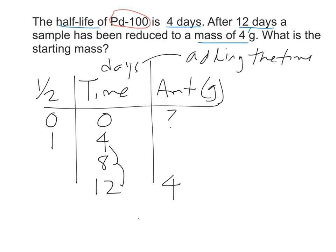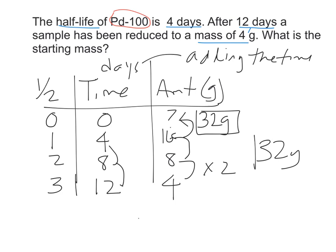I know that I'm left with four grams at twelve days and so that would mean it's three half-lives. I'm going to go backwards so I'm going to times this by two. Four times two is eight, eight times two is sixteen, sixteen times two is thirty-two. My answer is thirty-two grams.